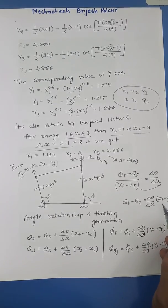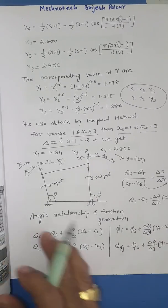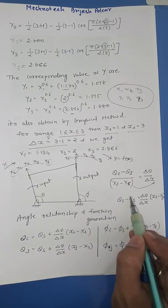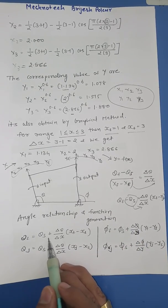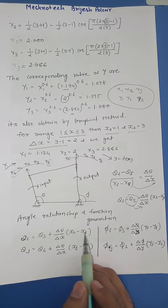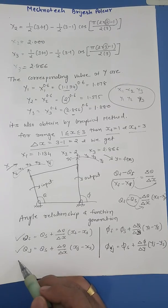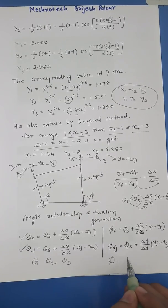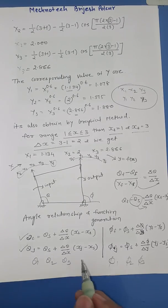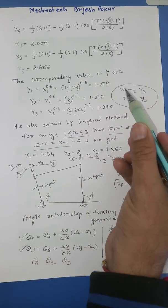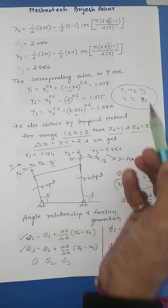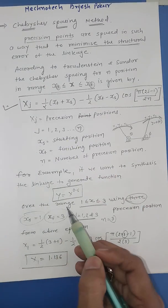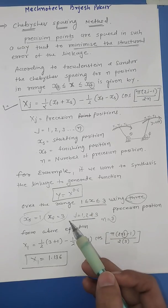So theta_f − theta_s = (delta_theta / delta_x) × (xf − xs). Finally, the angle relationship and the function generation is found by: theta_f = theta_s + (delta_theta / delta_x) × (xf − xs). This is for the first and last positions. By this way we can find out theta1, theta2, theta3 and similarly phi1, phi2, phi3. In the Chebyshev spacing method you have to find x1, x2, x3, y1, y2, y3, theta1, theta2, theta3, and phi1, phi2, phi3.